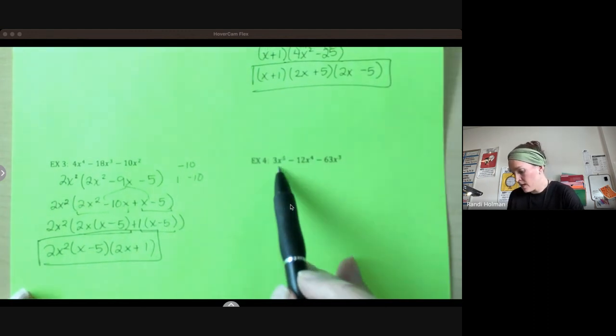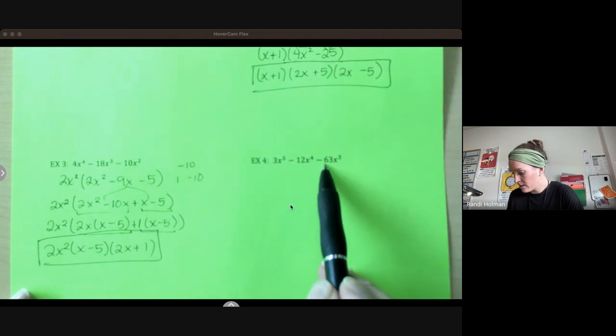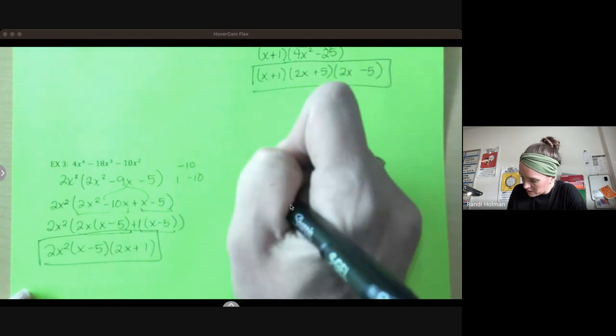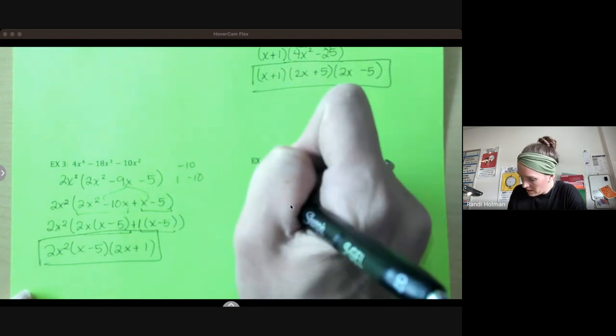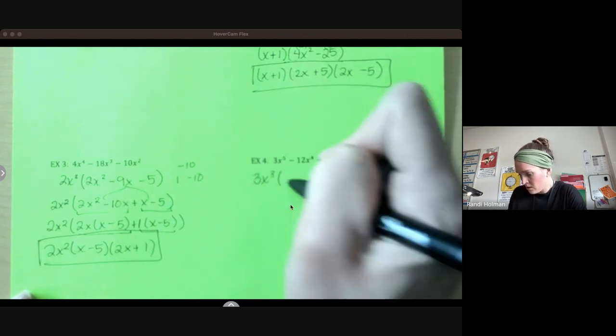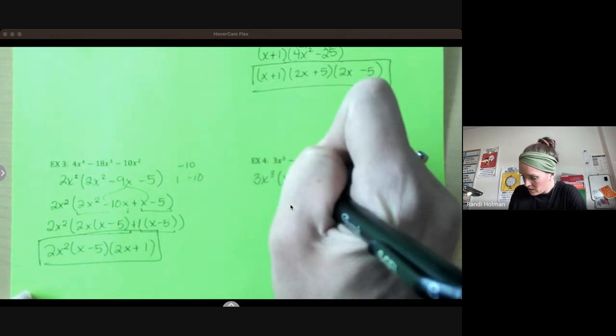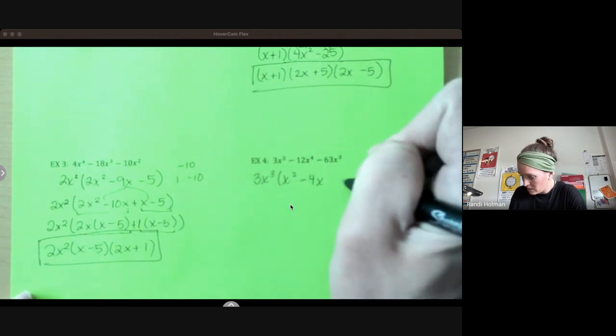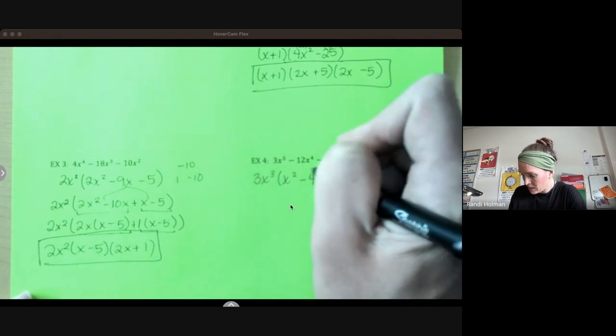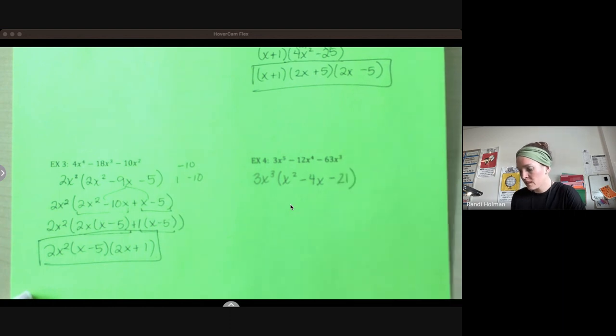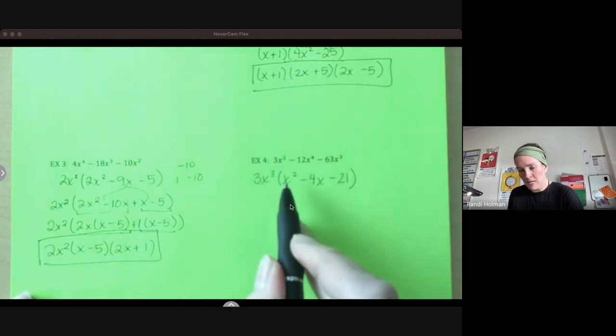Last one here. 3x⁵, 12x⁴, -63x³. Ooh, they all have a three and they all have x³. So 3x³, I'm left with x² - 4x - 21. Now I have an a value of one. So I'm just looking for factors of negative 21 that add to be negative four.